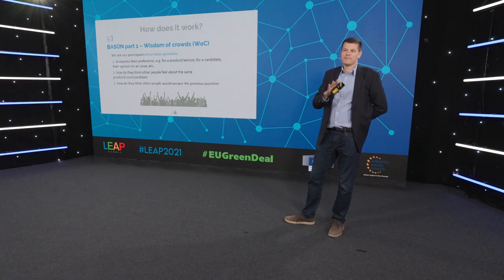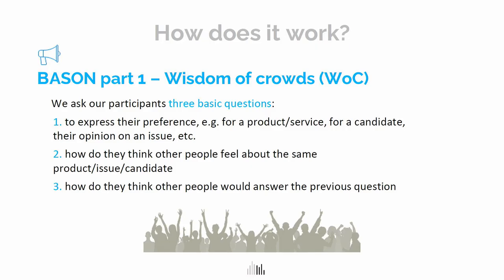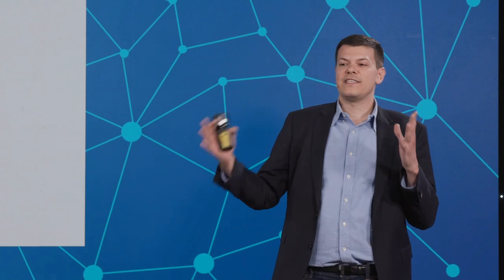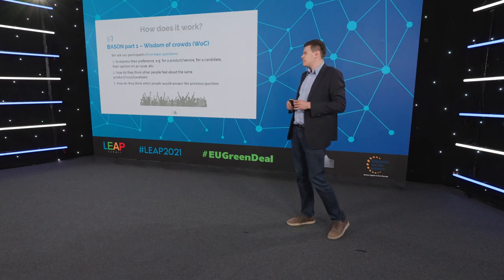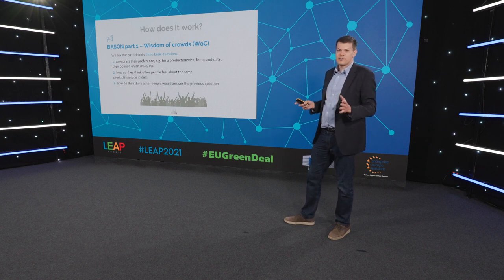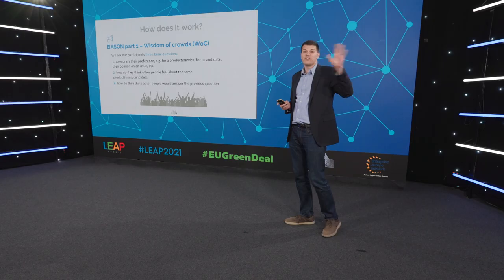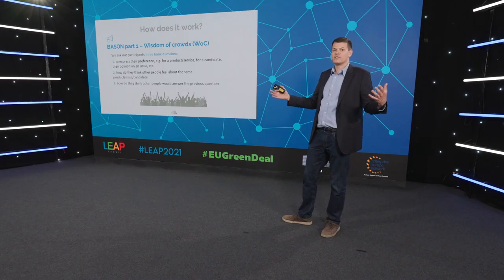So what's behind the approach? The whole Bayesian survey is based on two central parts. The first part is the wisdom of crowds concept. The story is basically that we ask you what you think is going to happen — so I'm not just asking you about your opinion directly, I'm also asking you what other people think. We ask our participants three basic questions: first, to express a preference on a product or a given issue — for example COVID vaccines — or for a specific political candidate.